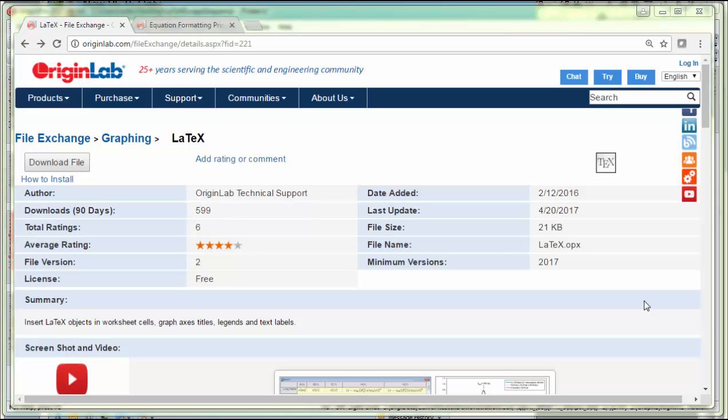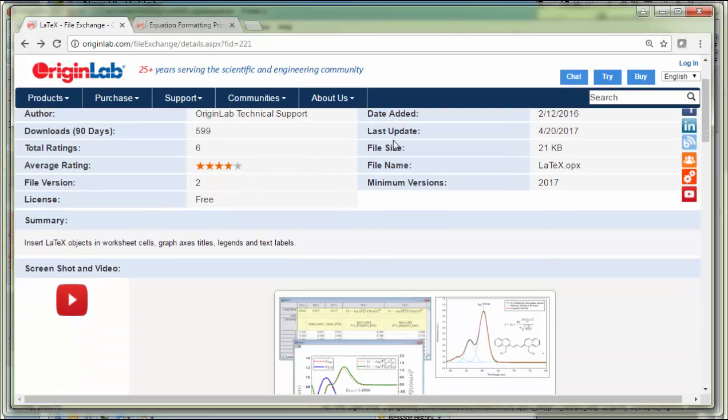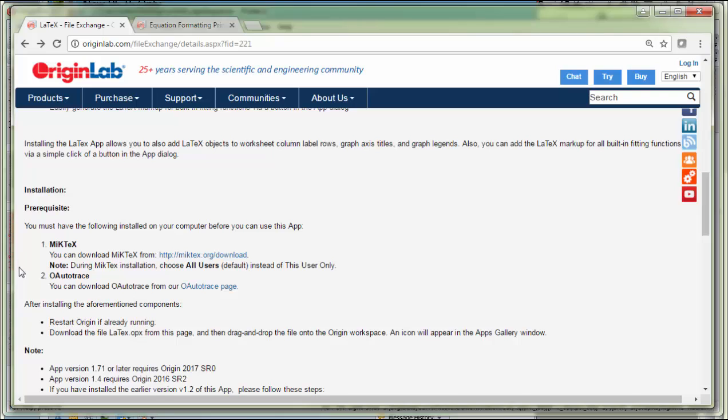The LaTeX app for Origin lets you add LaTeX objects to Origin graphs and worksheet cells. Before you install the app, go to the app page and scroll down to see that you need to install two other applications prior to installing the app.